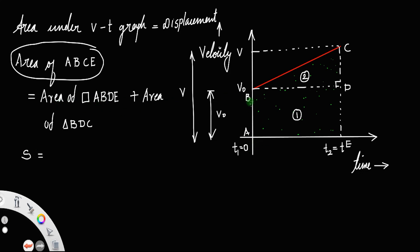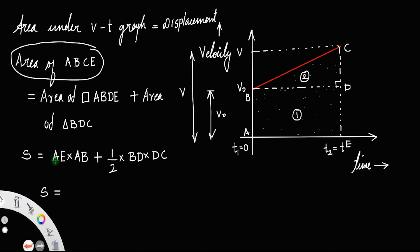Let us represent displacement as S. The area of rectangle ABDE equals base AE multiplied by height AB — that is length times breadth. The area of triangle BDC equals half times base BD times height DC. Therefore, S is equal to the sum of these two areas. Now, AE — looking at the graph — represents the total time T, so that whole length equals T.